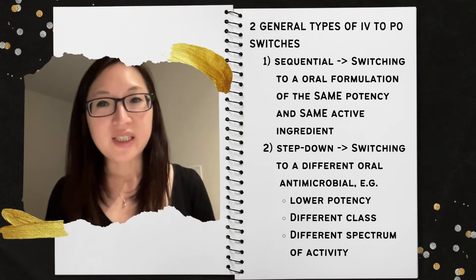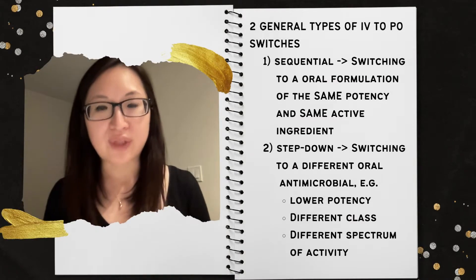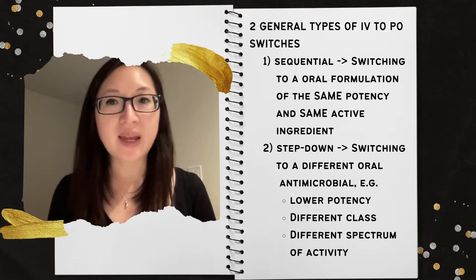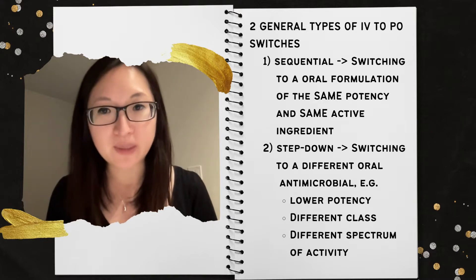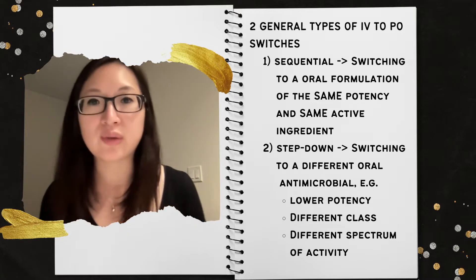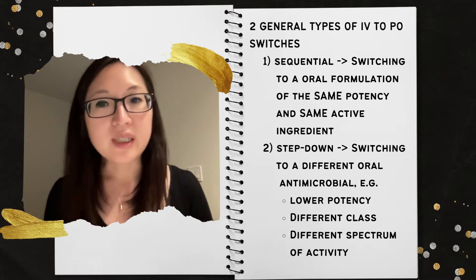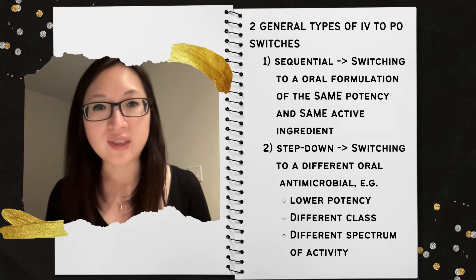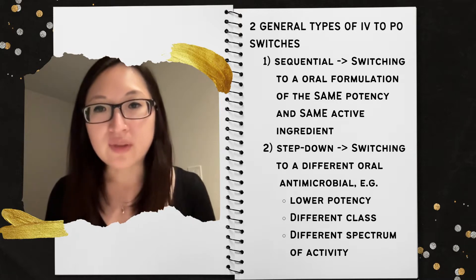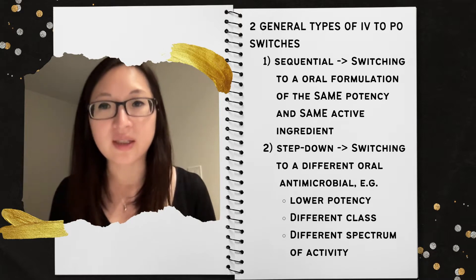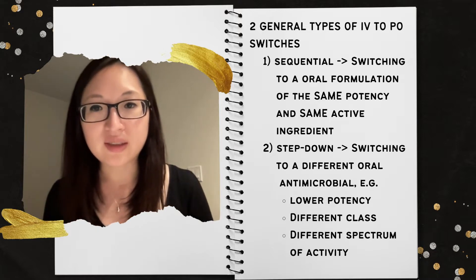Broadly speaking, there are two types of IV to oral switches. The first type is called sequential therapy, which refers to changing the same IV antimicrobial to its highly bioavailable oral form. Because the oral form is so well absorbed, it will maintain the same potency. An example of a sequential therapy switch is changing IV ciprofloxacin to oral ciprofloxacin.